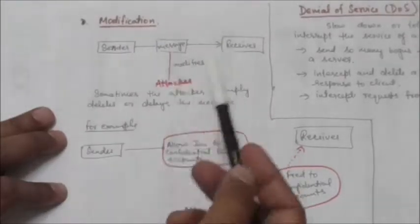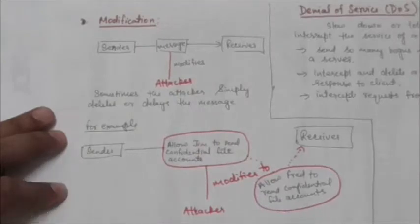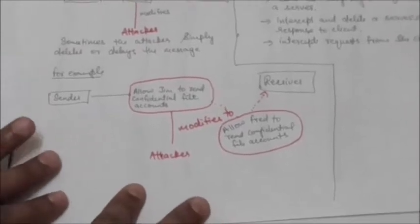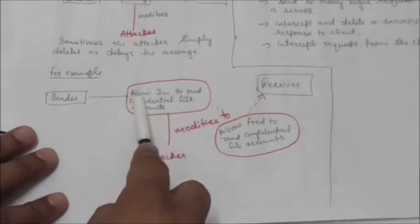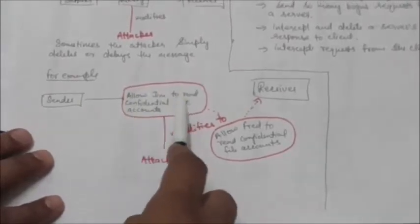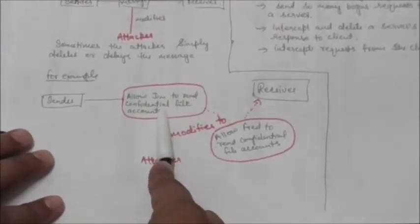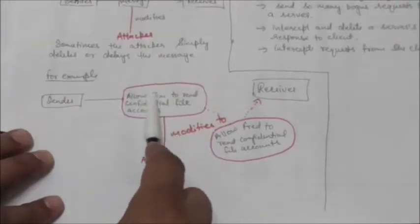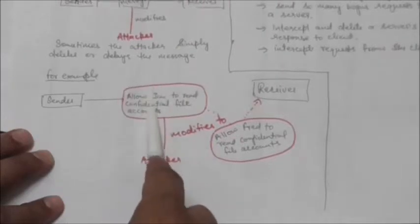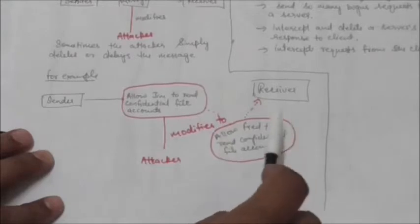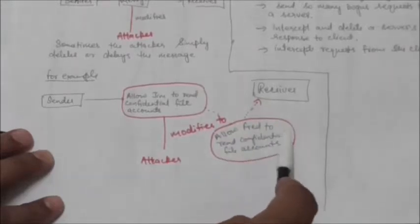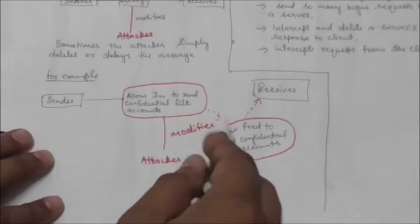For example, suppose there is a message: 'allow Jim to read confidential file accounts.' That message is modified by the attacker to mean 'allow Fred to read confidential file accounts.' So such types of attacks are modifications.